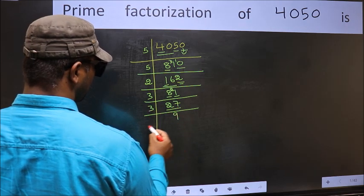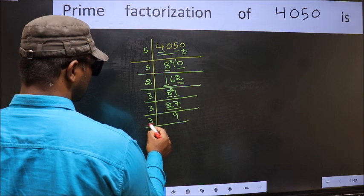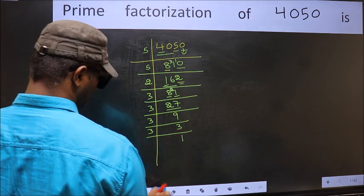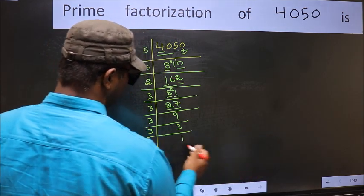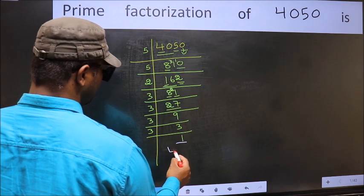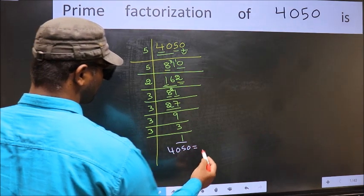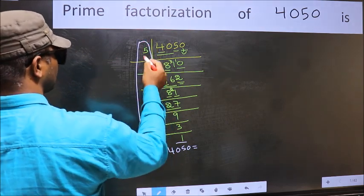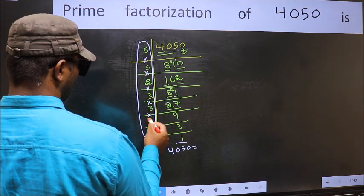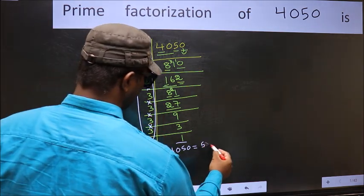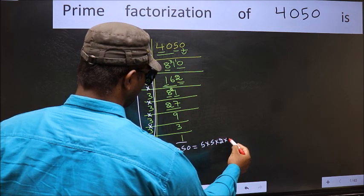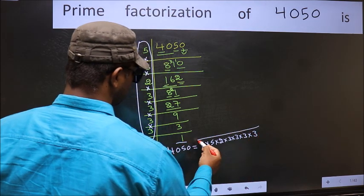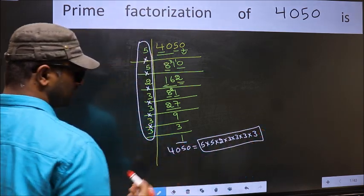Now we have 27. 3 nines are 27. Now we have 9. 3 threes are 9. Now we have 3. 3 is a prime number, so 3 divided by 3 is 1. We got 1 here. So the prime factorization of 4050 is the product of these numbers: 5 × 5 × 5 × 2 × 2 × 3 × 3 × 3 × 3. This is the prime factorization of 4050.